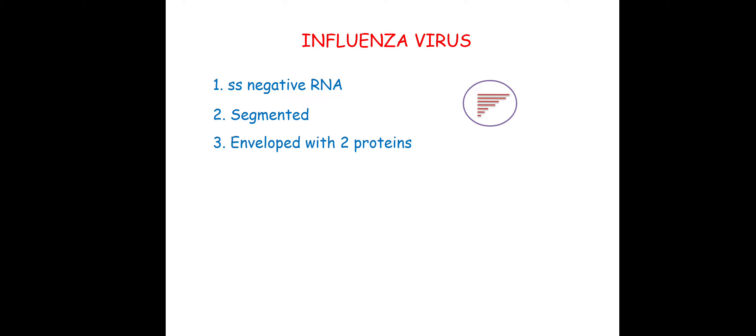The third important point is the envelope contains two proteins. Basically, this genetic material is covered with a coating called the nucleocapsid. Upon this nucleocapsid, two important proteins are present: the first is the orange-colored protein known as hemagglutinin, and the second is this green-colored T-shaped protein known as neuraminidase.